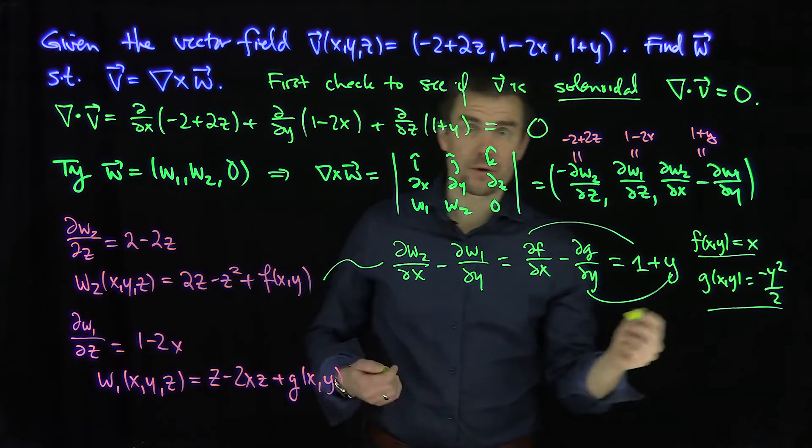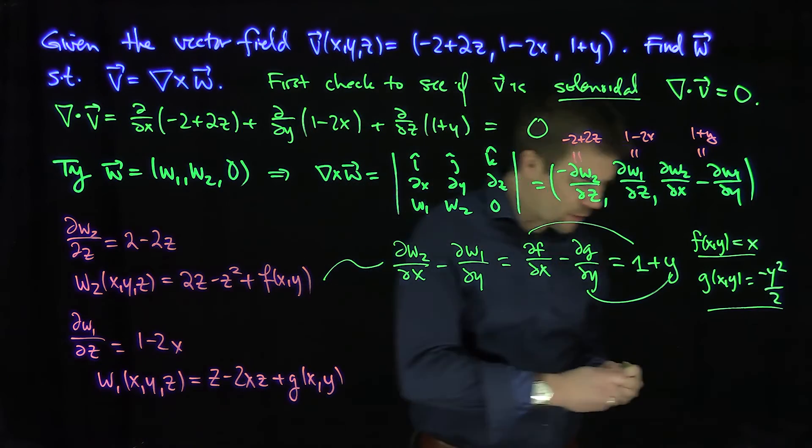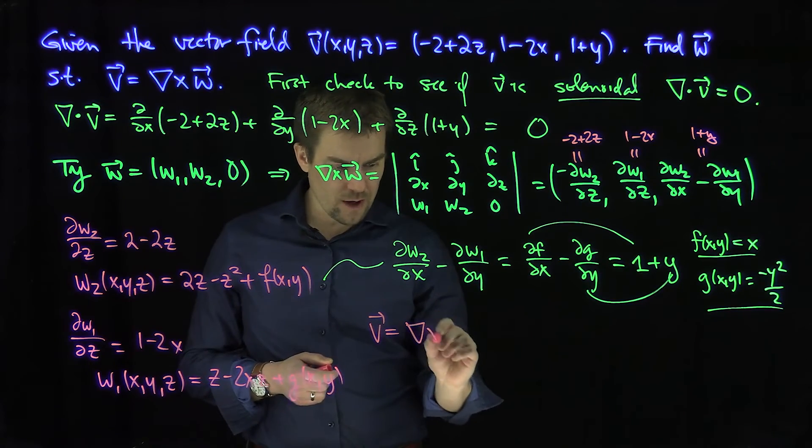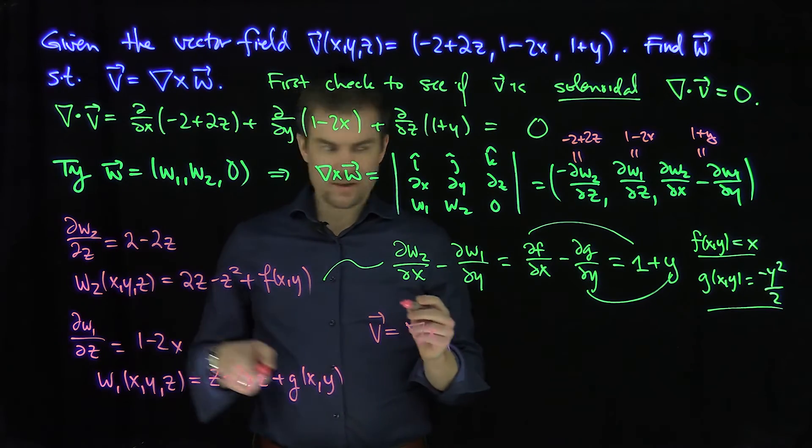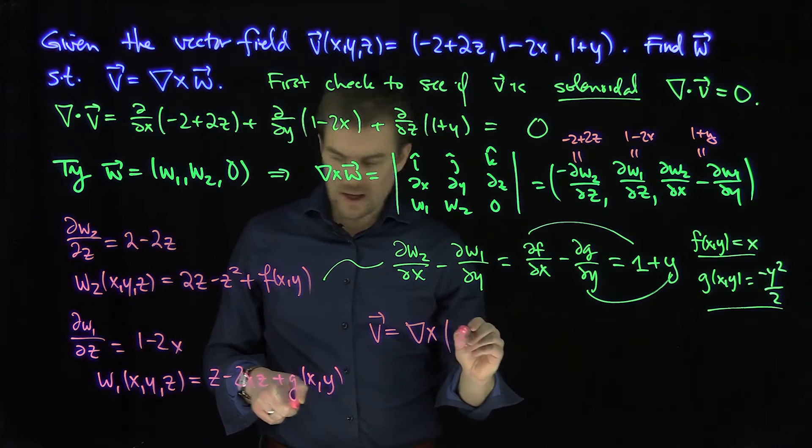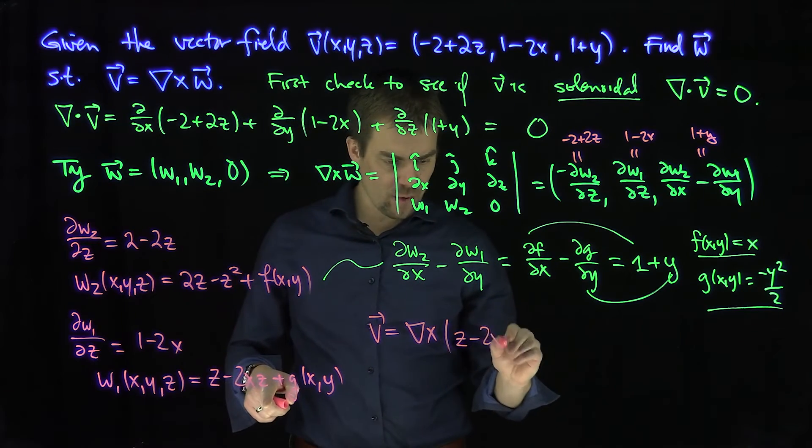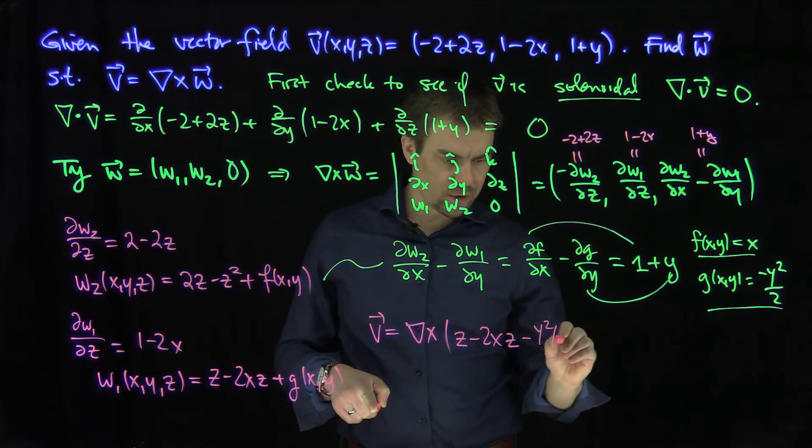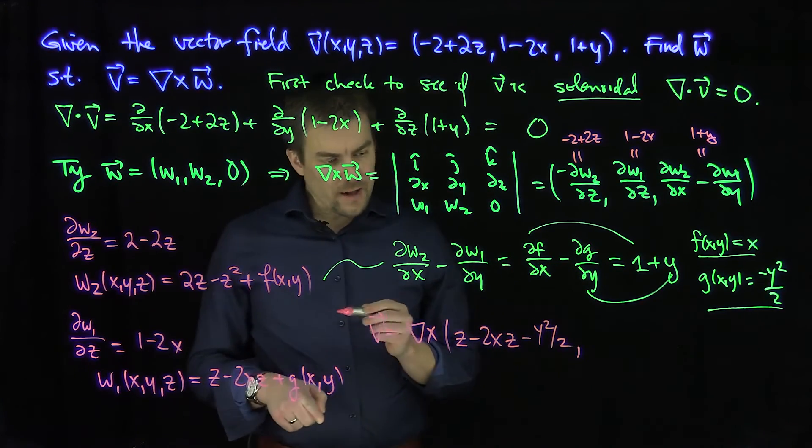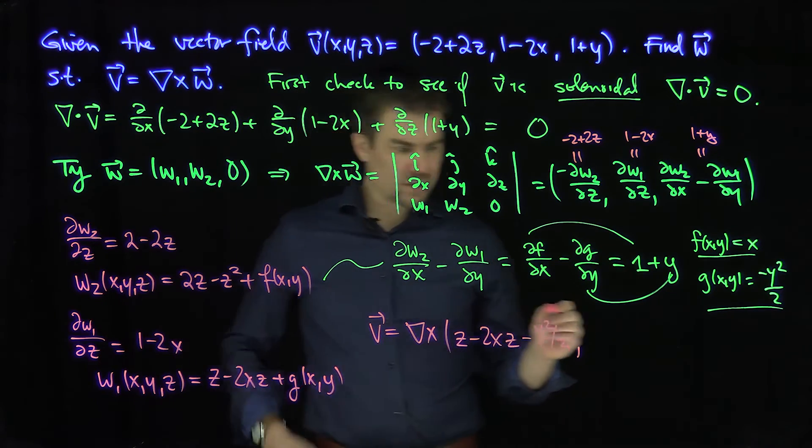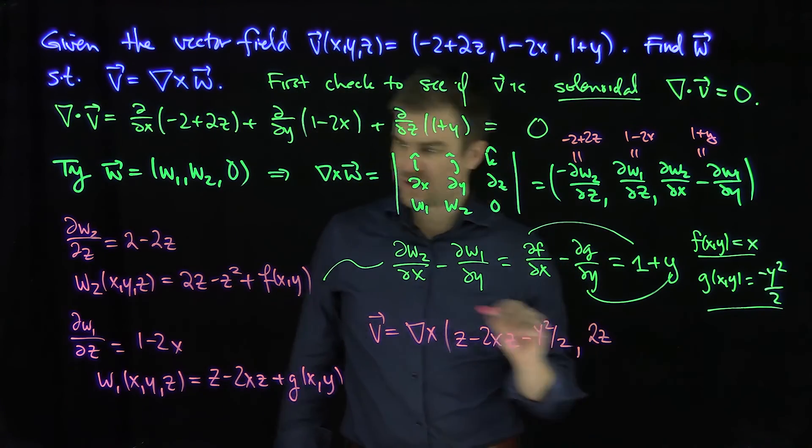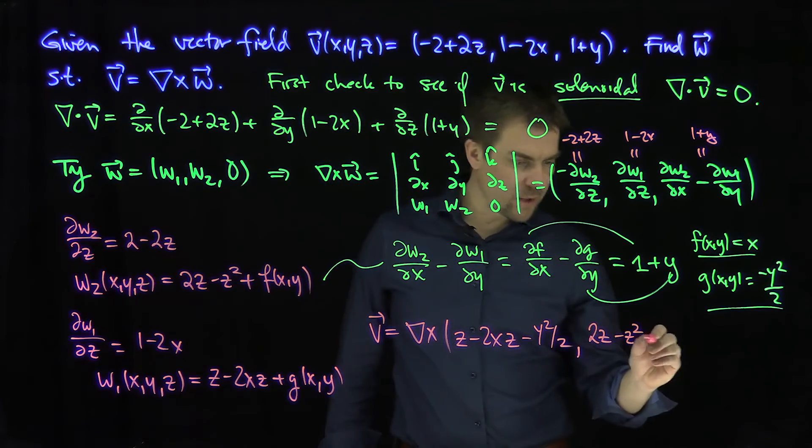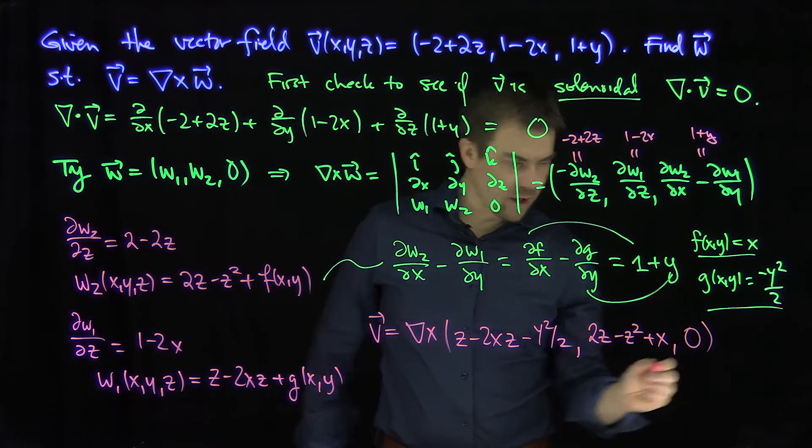Great. So I just found my f and my g, and there's many other choices that work too. So now we're at the stage where we can write down our vector potential. So our vector field v is equal to the curl of w. My w1 is z minus 2xz minus y squared over 2. And then I'll have w2, which is going to be 2z minus z squared plus x, then comma 0.